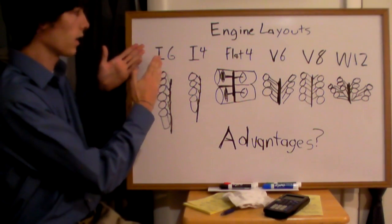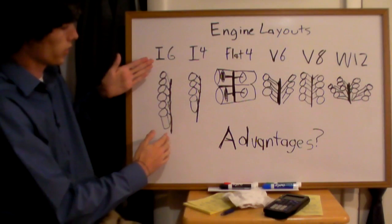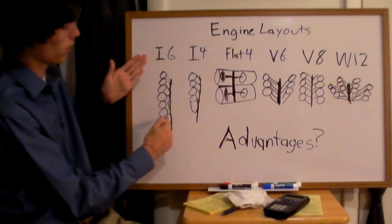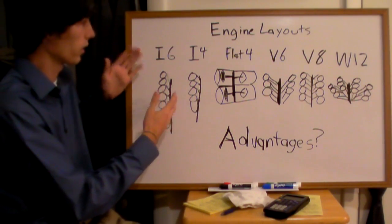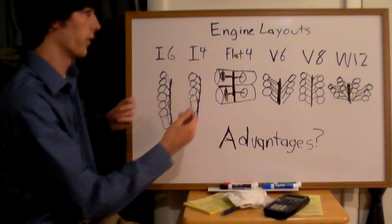With an inline six, there are going to be six cylinders in a row, all connected to the same crankshaft which will be powering your vehicle. An inline four is the same thing, only it has four cylinders.